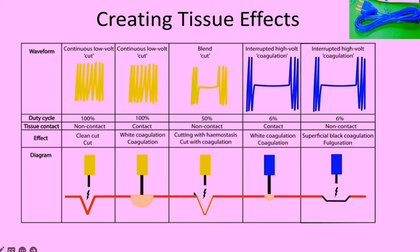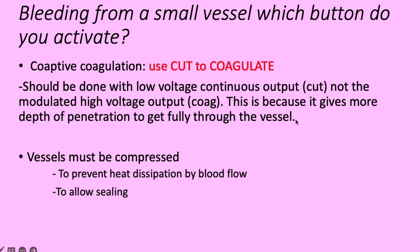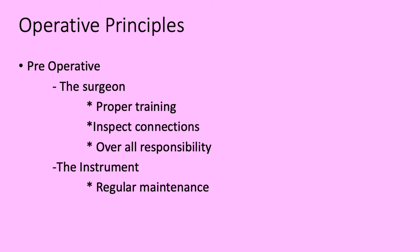In the blend mode, both cutting and coagulation work together. If you have bleeding from a small vessel, you might think to activate the coagulate button, but actually you should activate the cut button. This is because cutting gives enough depth of penetration to fully access the vessel. When trying to secure the vessel, it should be compressed to prevent heat dissipation by blood flow and to allow enough sealing.